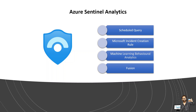Next we have Microsoft incident creation rules, also known as Microsoft security rules. These rules are used to generate Azure Sentinel incidents from other Microsoft security solutions like Cloud App Security, Azure Security Center, Azure Active Directory Identity Protection, etc. When you connect a Microsoft solution to Sentinel like MCAS, any alert generated within the MCAS service will be stored as raw data in the security alerts table in the Azure Sentinel workspace.